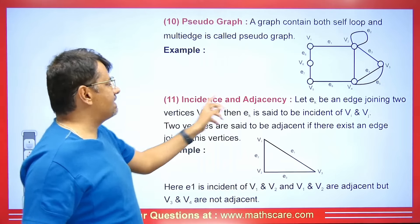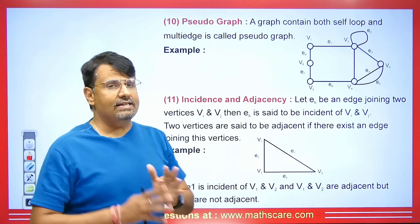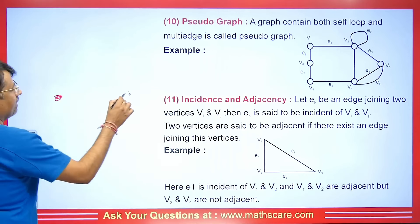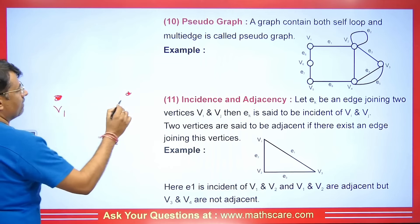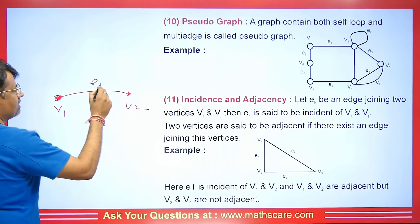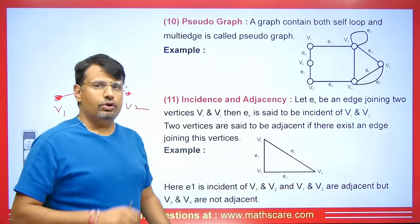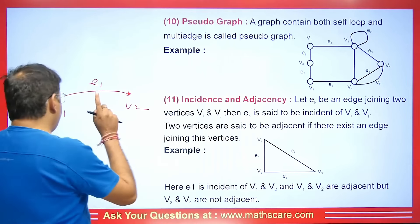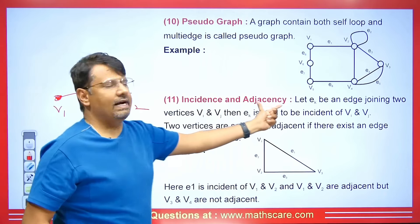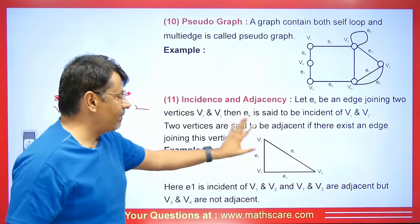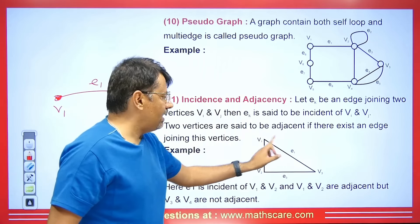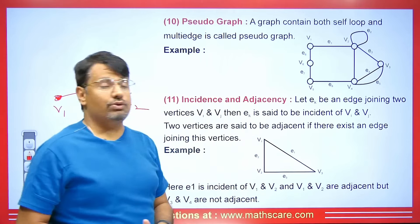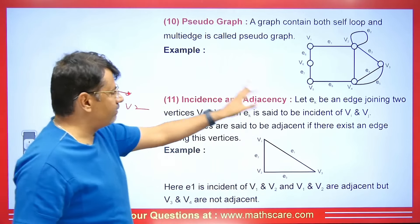Let's move ahead and see what incidence and adjacency are. Suppose we have vertex V1 and vertex V2, and the edge connecting them is E1. E1 is said to be incident on V1 and V2. The vertices V1 and V2 are said to be adjacent with respect to E1. Similarly, E1 is incidence for V1 and V3, and V1 and V3 are adjacency to that edge which connects them.